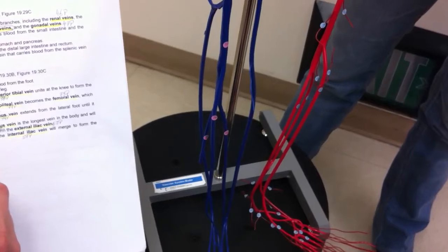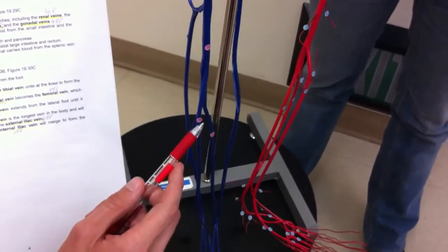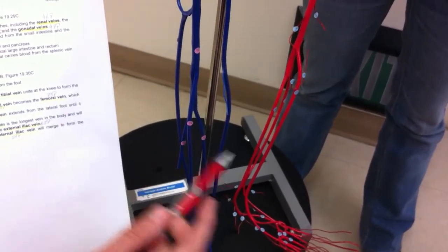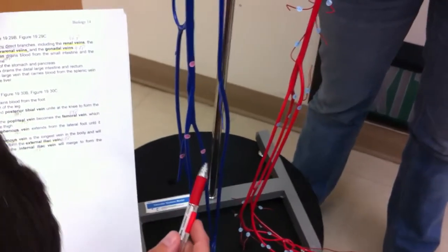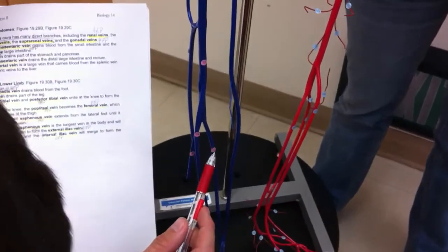Next we got the anterior tibial, which is number 79, followed by the posterior tibial, which is number 78.